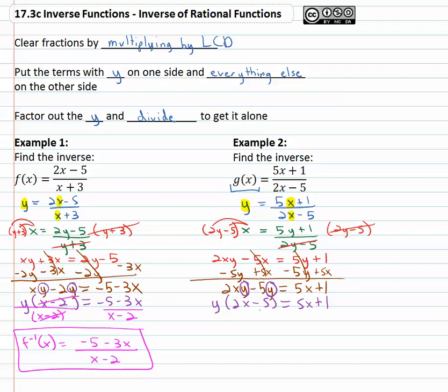And then we can get the y alone by dividing both sides by that (2x - 5) factor. And we end up with y equals (5x + 1)/(2x - 5).